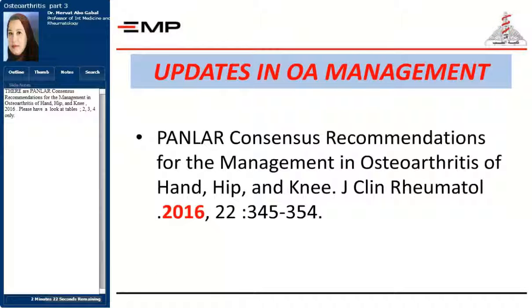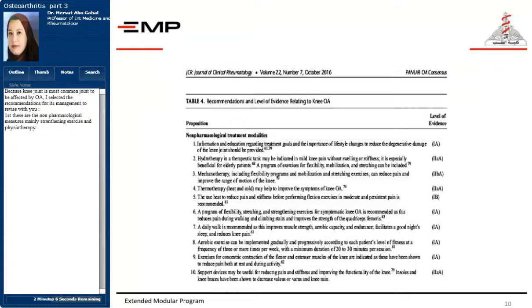There are parallel consensus recommendations for the management of osteoarthritis of the hand, hip, and knee from 2016. Please have a look at tables 2, 3, and 4 only. Because the knee joint is most commonly affected by osteoarthritis, I selected the recommendations for its management to revise with you. First, these are the non-pharmacological measures, mainly strengthening exercise and physiotherapy.